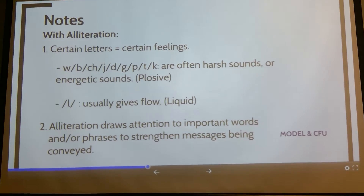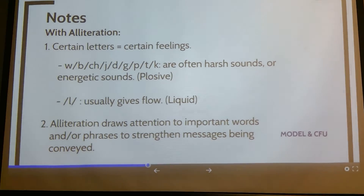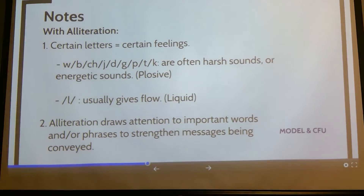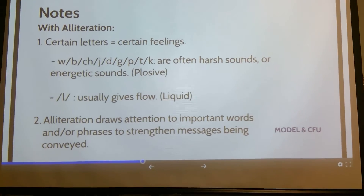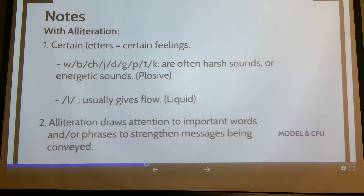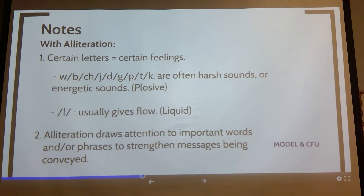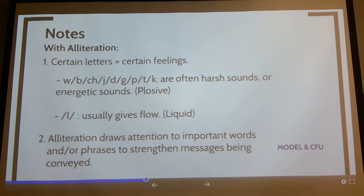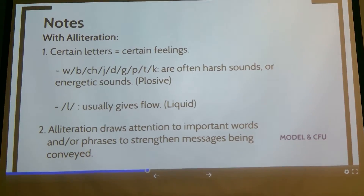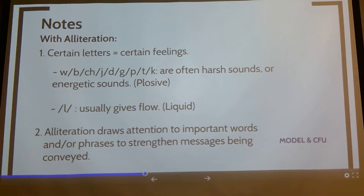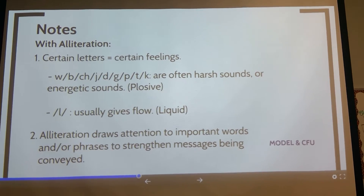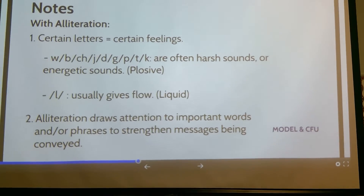There are three types today; we talked about two — the plosives and the liquid. So your plosives, those are not letters, those are sounds. When you're reading something where these sounds are repeated very closely together, they can tell readers that the information being said is either something harsh — very negative or maybe unfair or wrong — or it may be very energetic, very happy, upbeat, lively. Those sounds are W, B, Ch, J, D, G, P, T, K.